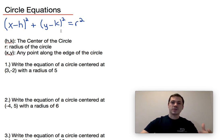Now each of these variables represents something. The values for h and k indicate the x and y coordinate of the center of the circle, r represents the radius of the circle, and x and y represent any point along the edge of the circle.